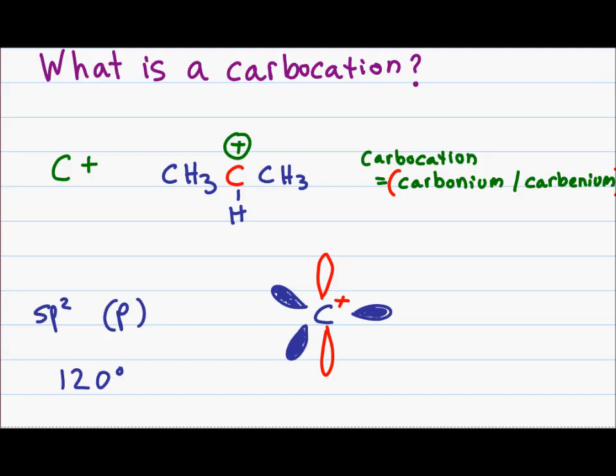A common area of confusion with the carbocation: recognize that you don't actually have something positive, but rather the positive charge comes from a lack of something. It's not that the positive charge occupies the p orbital — that p orbital is empty, waiting for something to fill it. Because of this lack of electrons, a carbocation is going to be a very strong electrophile. Recall that electrophile means electron-loving or electron-seeking, and the carbocation will be susceptible to attack by a base or nucleophile.